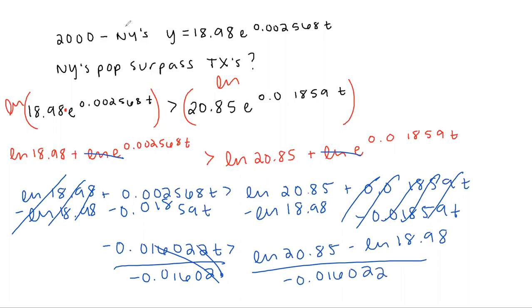Our T should be less than, because we divided by a negative number, let's flip that inequality symbol. T should be less than negative 5.865. Now, because we're getting the time as being negative, that doesn't make any sense. So what that lets us know is that New York's population will not surpass Texas's in the future, at least according to this equation.